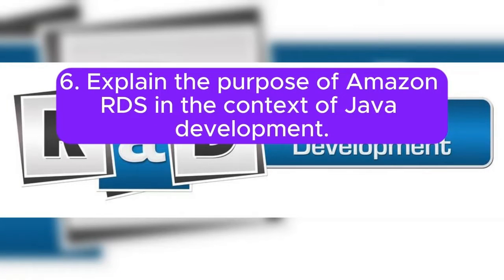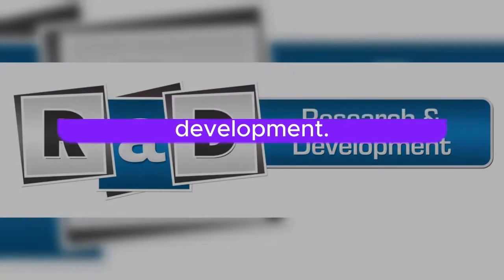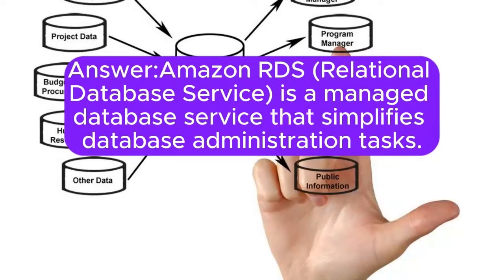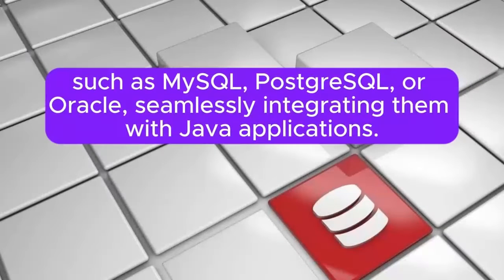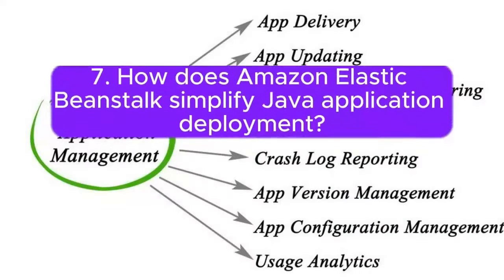Question 6: Explain the purpose of Amazon RDS in the context of Java development. Amazon RDS Relational Database Service is a managed database service that simplifies database administration tasks. Java developers use RDS to create, manage, and scale relational databases such as MySQL, PostgreSQL, or Oracle, seamlessly integrating them with Java applications.